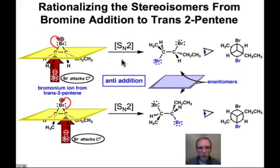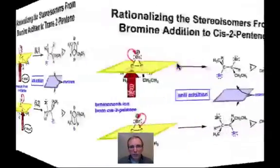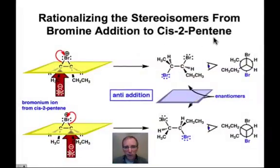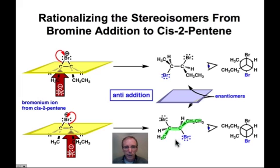The same method applied to trans-2-pentene can also be applied to cis-2-pentene, and you should work through this on your own. There's also a ChemTube 3D model to look at. What I want to conclude with is to show you that one of these products has exactly the same line-angle drawing as that shown at the very beginning of this webcast.